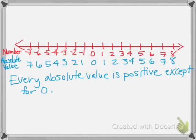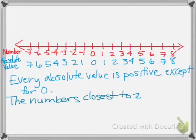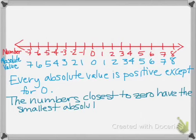Every absolute value is positive except for zero — that's something important to remember. You're never going to have a negative absolute value. The numbers closest to zero have the smallest absolute values, so the farther away from zero, the larger the absolute value.